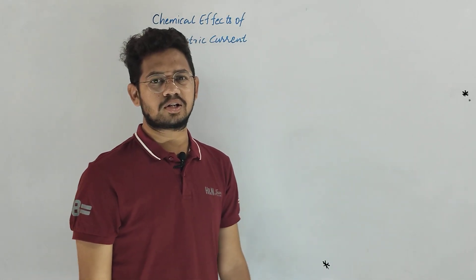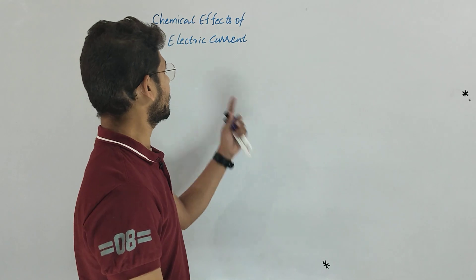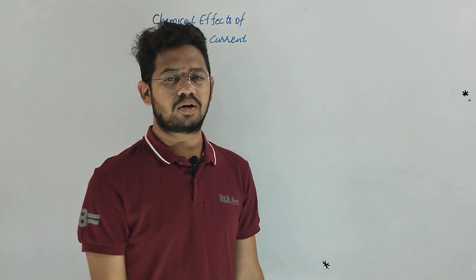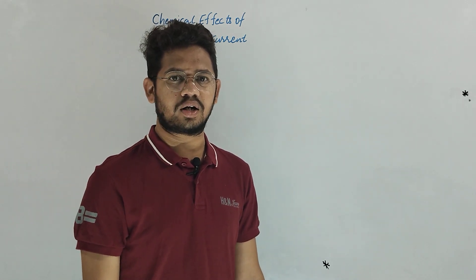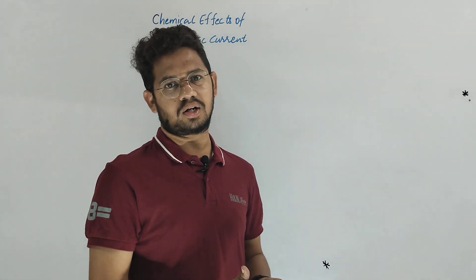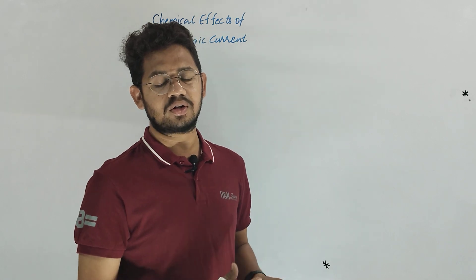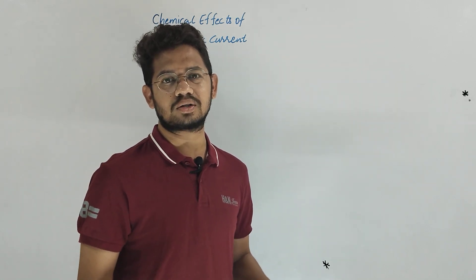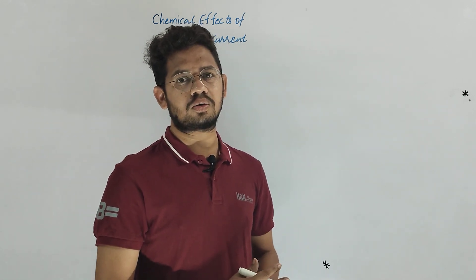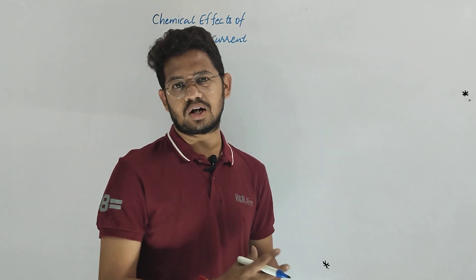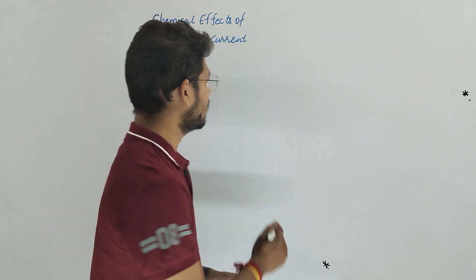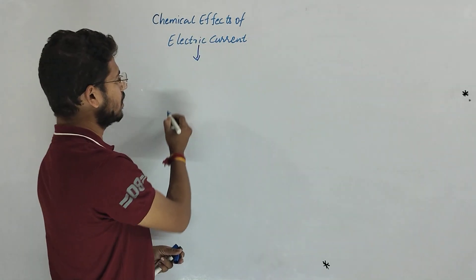Good morning students. Today we will discuss the topic called chemical effects of electric current. In your previous classes you have read about the effects of electric current, how it behaves, and what are the remaining effects of electric current. In this chapter we are going to learn about some effects of electric current under the influence of a chemical.